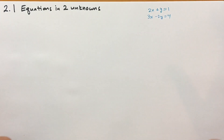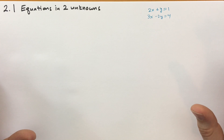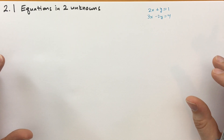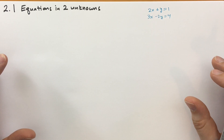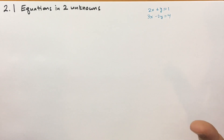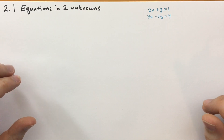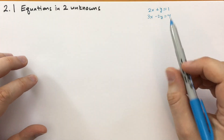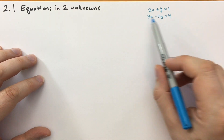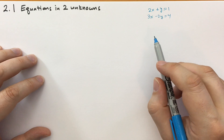Now if you've been doing the homework exercises, you know how to solve a single equation with a single unknown. But solving two equations at the same time with two variables is going to be a new technique for you. Thankfully, it's not that difficult. The first thing we want to do is add or subtract these equations so we can get a variable all by itself.